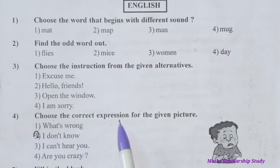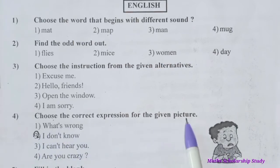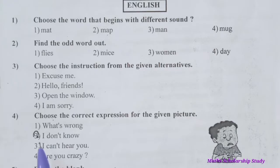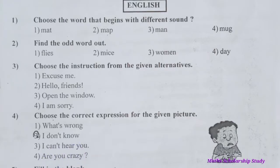Question number four: Choose the correct expression for the given picture. Options are: What's wrong?, I don't know, I can't hear you, Are you crazy? The expression shown is 'I don't know'. Option number two is correct.